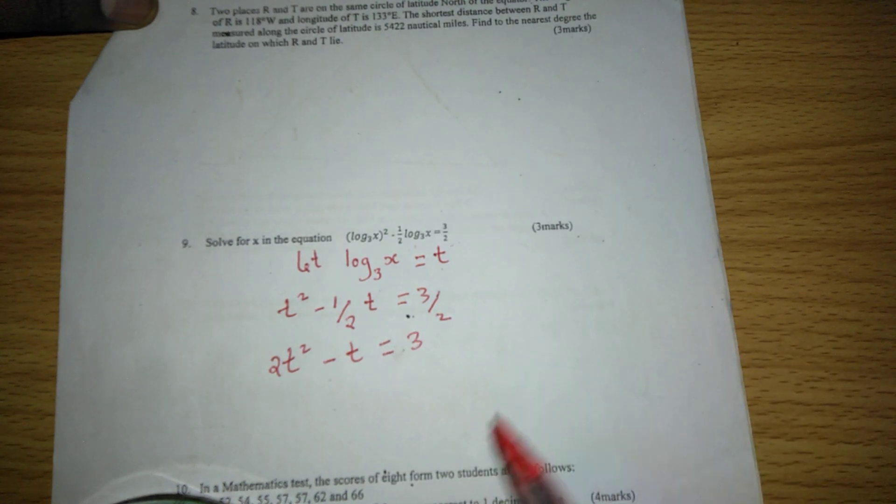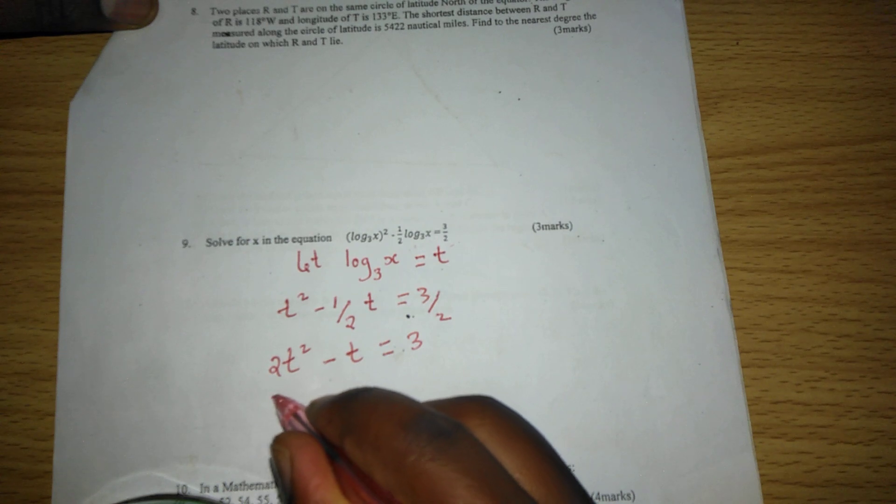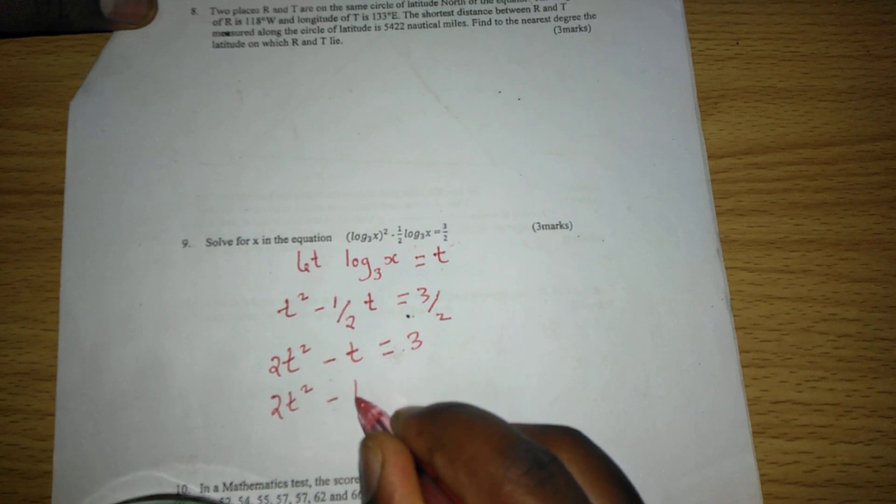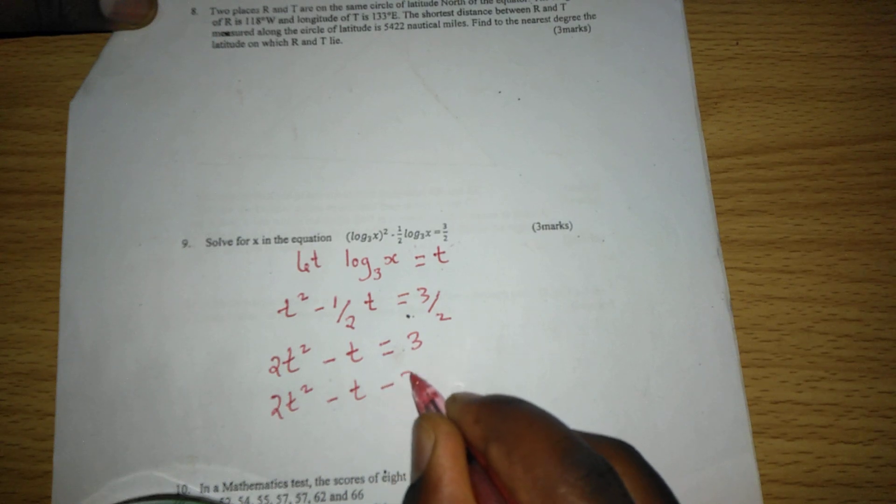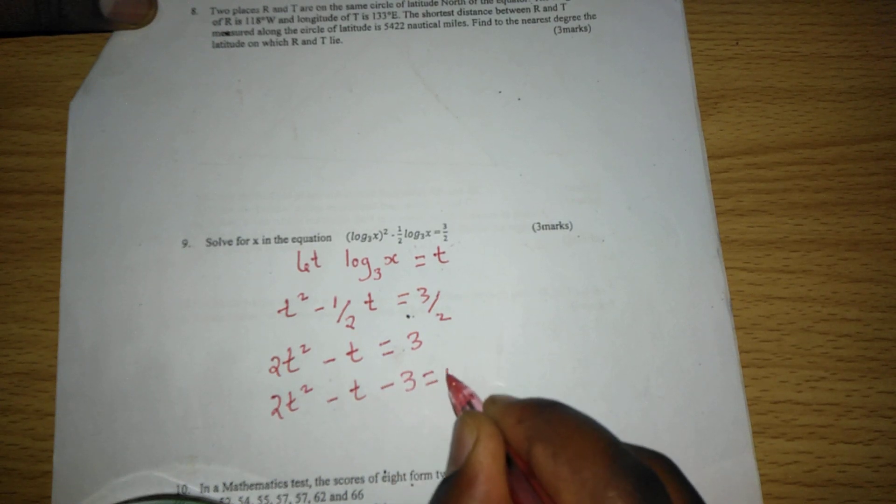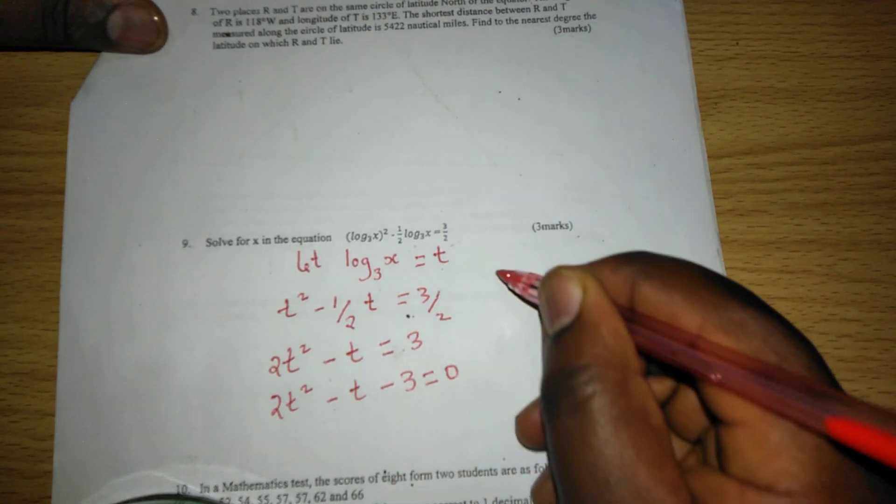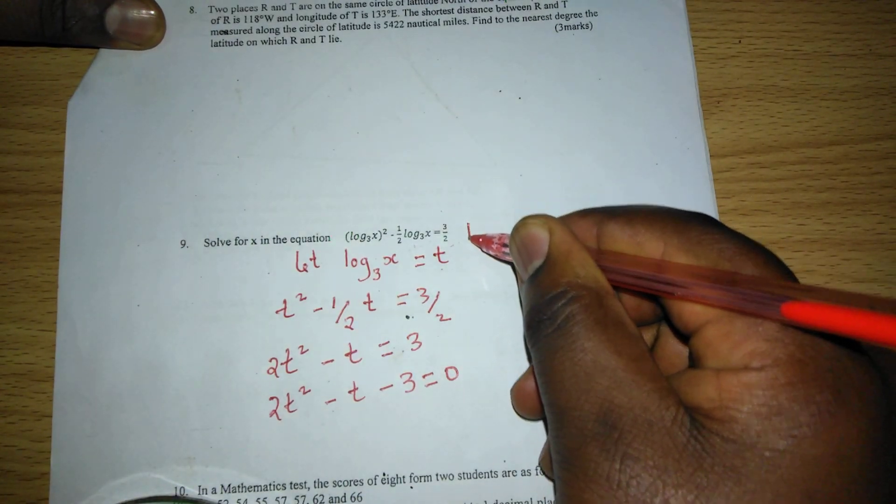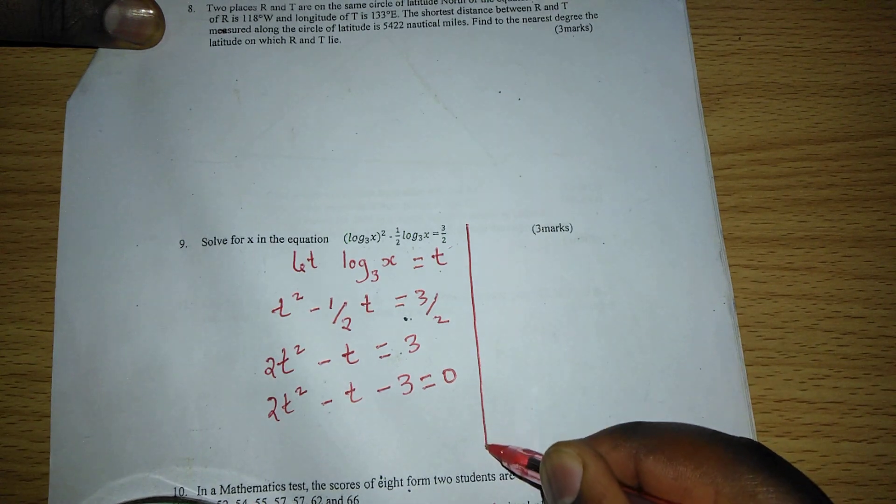Rearranging this equation, it will give us 2t squared minus t minus 3 equals 0. This nature of equation we call quadratic, and a quadratic equation can be solved.